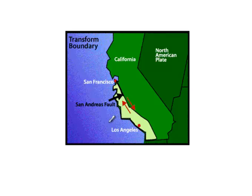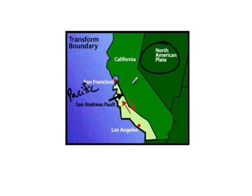If we look at where a transform boundary is occurring here in the United States, we can look at California. California is divided — the southwest portion is on the Pacific Plate, and the rest of California is on the North American Plate. The North American Plate is moving in one direction, while the Pacific Plate is moving in the other direction. All along those faults and transform boundaries, you have spots where it's getting stuck and pressure is building. When there are many small earthquakes that release pressure frequently, it's not that dangerous. But if there are no small earthquakes, that pressure is allowed to build and build, and when it finally does break, the pressure release is quite severe.